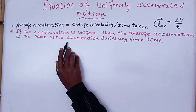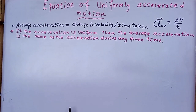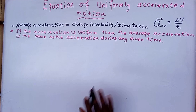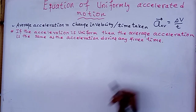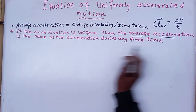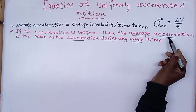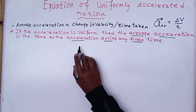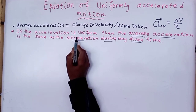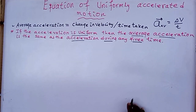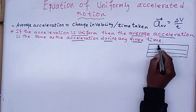If the acceleration is uniform, then the acceleration does not change. Average acceleration is the same as acceleration during any given time. If the acceleration is uniform, acceleration is equal to change in velocity over time.